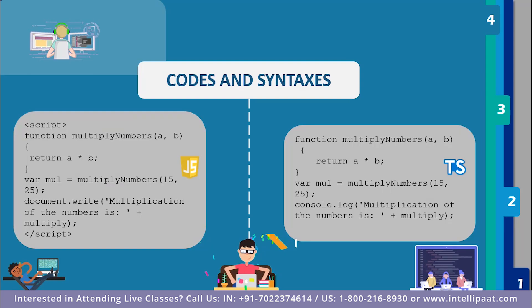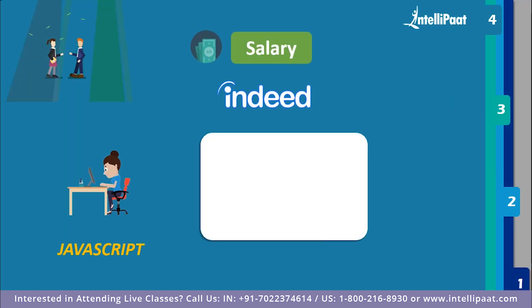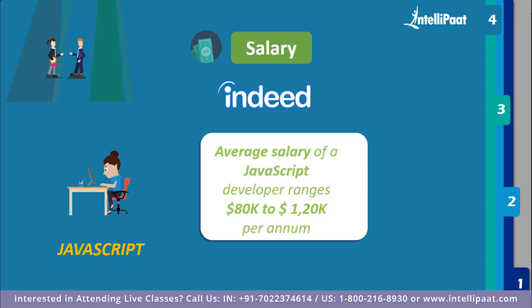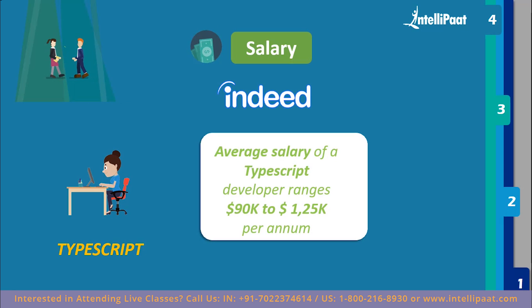Now for the interesting part — job vacancies and salary. According to Indeed.com, full-time job vacancies for JavaScript developers are around 27,775, with an average salary ranging from $80,000 to $120,000 per annum based on experience and skills. Full-time job vacancies for TypeScript developers are around 3,443, with an average salary ranging from $90,000 to $125,000 per annum based on experience.